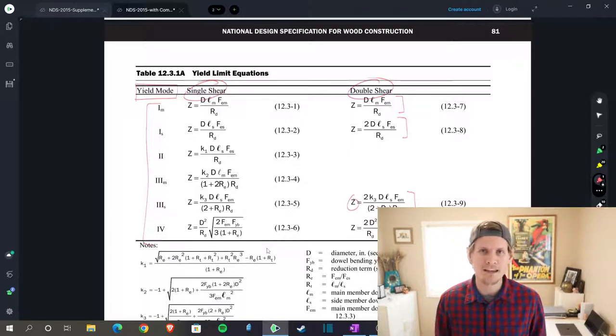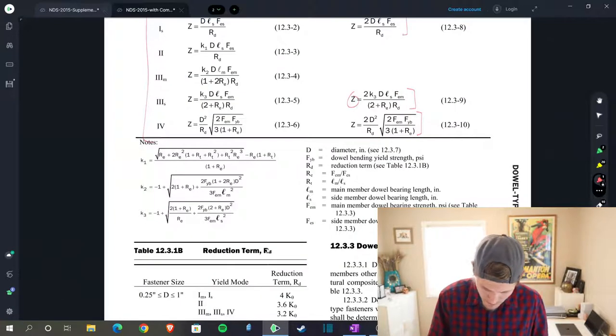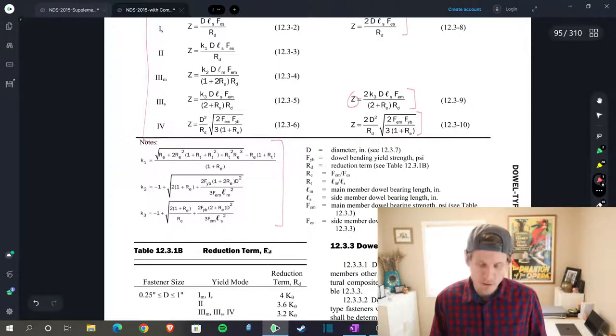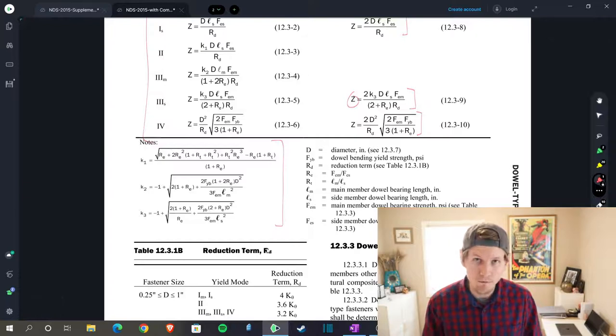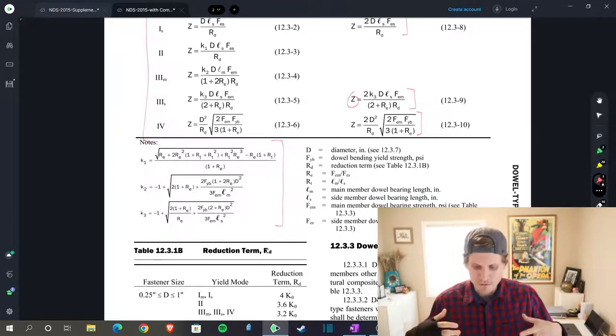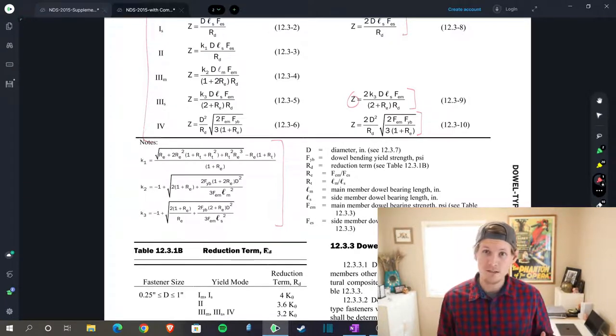But if you have something that is an outlier and doesn't match up with those tables in the back, you can't just pull from the table and say 'yep, that's good.' You would technically have to go through and solve all of these yield limit equations to determine your lower bound z value. They have it all here, but it's some pretty beefy equations. Something a spreadsheet would be really helpful for, but it does get you very involved with understanding the process of what's happening here in all the different limit states.